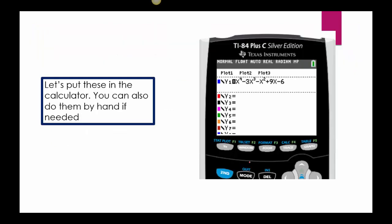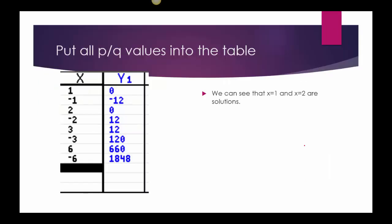We need to take those eight numbers and plug them into the function, looking for which ones give a zero. You can do it by hand, or you can grab the calculator, which is my choice. Go to y equals and plug in the function, then flip over to the table using second graph. I put in 1, negative 1, 2, negative 2, 3, negative 3, 6, negative 6 — and you can see that 1 and 2 give zeros. So 1 and 2 are solutions — we have two of them.